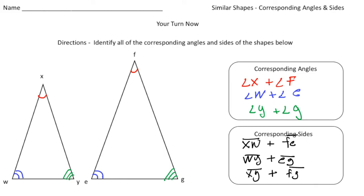Alright, so there's our three pairs of corresponding angles and our three pairs of corresponding sides of the two triangles which are similar. Alright, how'd you do? Good job.